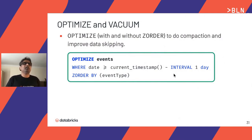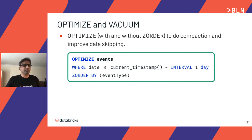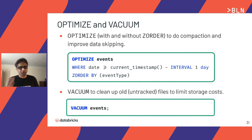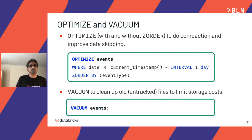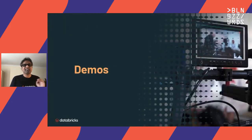Optimize and vacuum are important concepts. Optimize performs bin-packing and compaction and enables data skipping with Z-ordering. Vacuum is a simple command — 'VACUUM table_name' — that cleans up all old untracked files from Delta storage to limit storage costs.